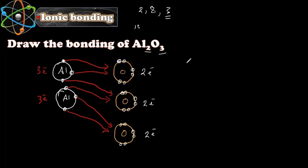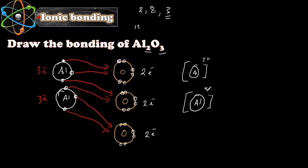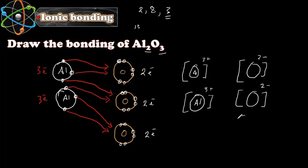Now we draw the ions with their charges after losing and gaining electrons. Each aluminium becomes Al³⁺ because it lost three electrons, and each oxygen becomes O²⁻ because it gained two electrons. This is how we draw the ionic bonding of aluminium oxide. I hope this was helpful. In the next video we're going to look at a covalent compound — until then, ciao!